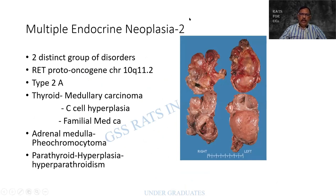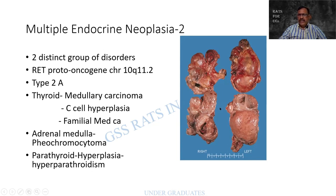MEN2 — Multiple Endocrine Neoplasia 2 — is divided into 2a and 2b, two distinct groups of disorders. The defect is in the RET proto-oncogene, located on chromosome 10q11.2. In MEN2a: medullary carcinoma or C-cell hyperplasia (sometimes familial), pheochromocytoma of the adrenal, and parathyroid hyperplasia or hyperparathyroidism. The image shows the bilateral adrenal tumor with lobulated appearance.